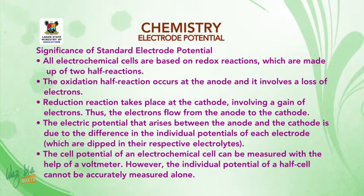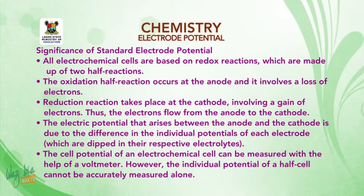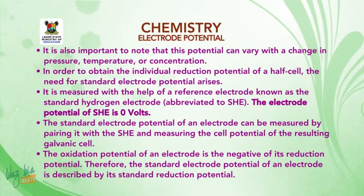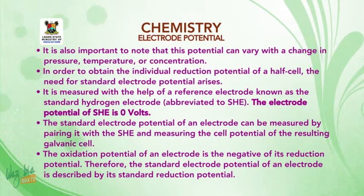The cell potential of an electrochemical cell can be measured with the help of a voltmeter. However, the individual potential of a half cell cannot be accurately measured alone. It is also important to note that the potential can vary with a change in pressure, temperature, or concentration. In order to obtain the individual reduction potential of a half cell, the need for standard electropotential arises.